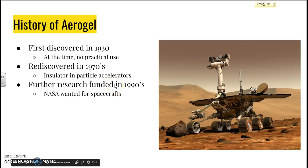Eventually, in 1990, NASA started to fund the research behind aerogels because they wanted to use it for their spacecrafts. In fact, here we've got a picture of the Mars rover. A lot of the Mars rover architecture is insulated with aerogel.